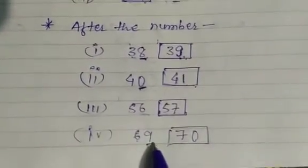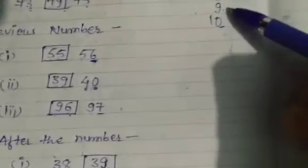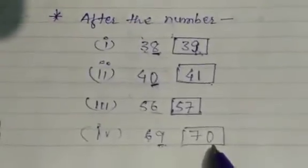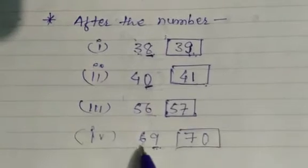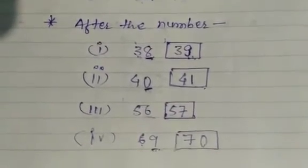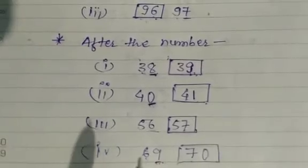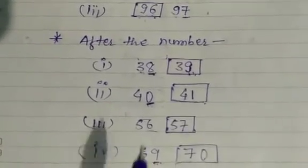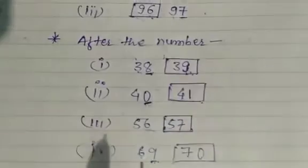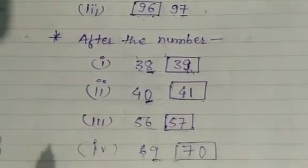After 69: the ones digit is 9, and after 9 comes 0. Since the ones place is 9, there is a condition — we add 1 to the tens place. The tens digit 6 becomes 7, so the answer is 70. The rule is: for the 'before' case, if the ones place is 0, subtract 1 from the tens. For the 'after' case, if the ones place is 9, add 1 to the tens.